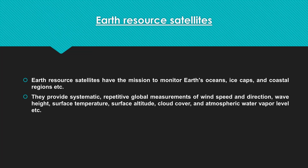On the basis of purpose, satellites are classified into two types: earth resource satellites and meteorological satellites. The basic purpose of earth resource satellites is to capture information about Earth's oceans, ice caps, and coastal regions. Simply put, the main purpose of earth resource satellites is to identify and capture information about the Earth's basic natural resources.